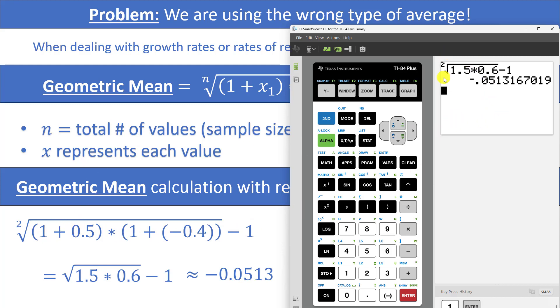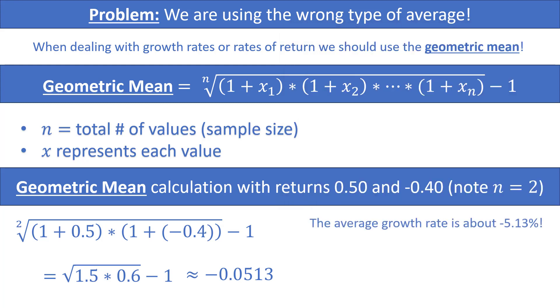Alternatively we could also have taken the 1 half power. You may remember that square roots or any roots are just fractional powers. So instead of doing the square root here we could have typed in parentheses 1.5 times 0.6 close parentheses raised to the 1 half power, and then we can subtract 1 and we will get the same answer. So this means that in this case our average growth rate is about negative 5.13 percent. This is the rate that $100 could grow at for two years to reach $90.